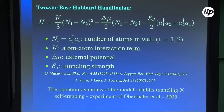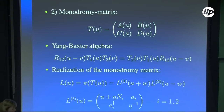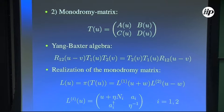In the algebraic Bethe ansatz, we have three basic ingredients. The first ingredient is the R matrix: a 4×4 matrix with elements 1, b, c, where U is the spectral parameter. This R matrix must obey the Yang-Baxter algebra. The second ingredient is the so-called monodromy matrix T, which must also be chosen so that the Yang-Baxter algebra for the monodromy matrix — the RTT relation — is obeyed. We choose a realization of the monodromy matrix written in terms of the Heisenberg algebra, and we can show that with this choice the monodromy matrix obeys the Yang-Baxter algebra.